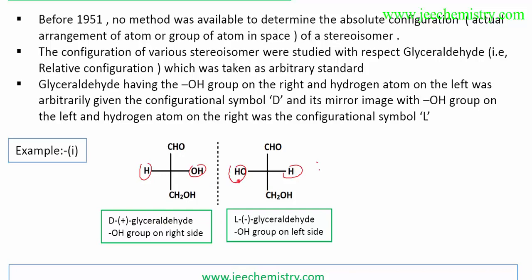We have taken glyceraldehyde as a reference. If any compound has an OH group, we have to consider the OH group. If OH is on the right side, then that compound will be D configuration. If OH is on the left side, then that compound will be L configuration, with respect to glyceraldehyde.